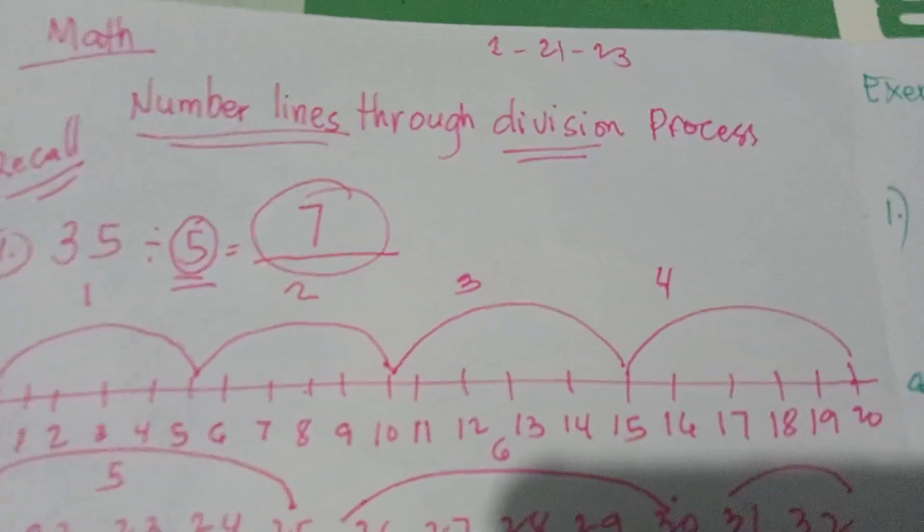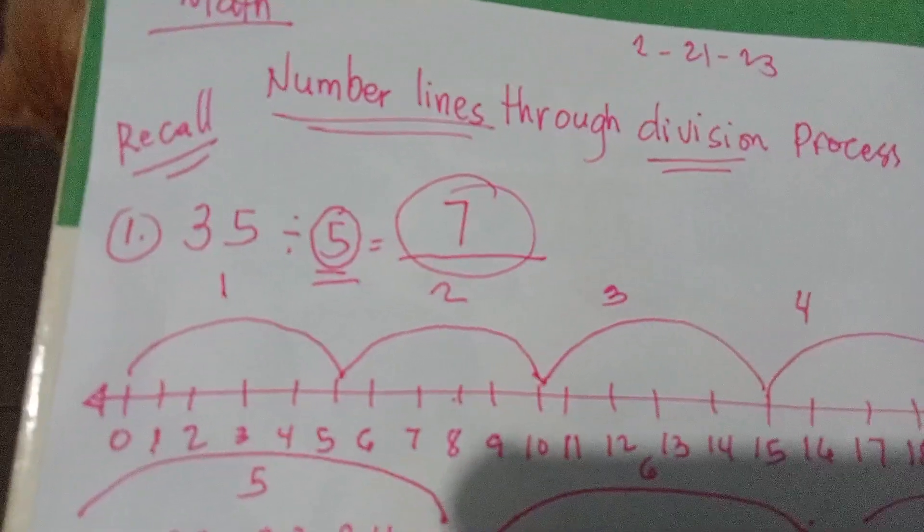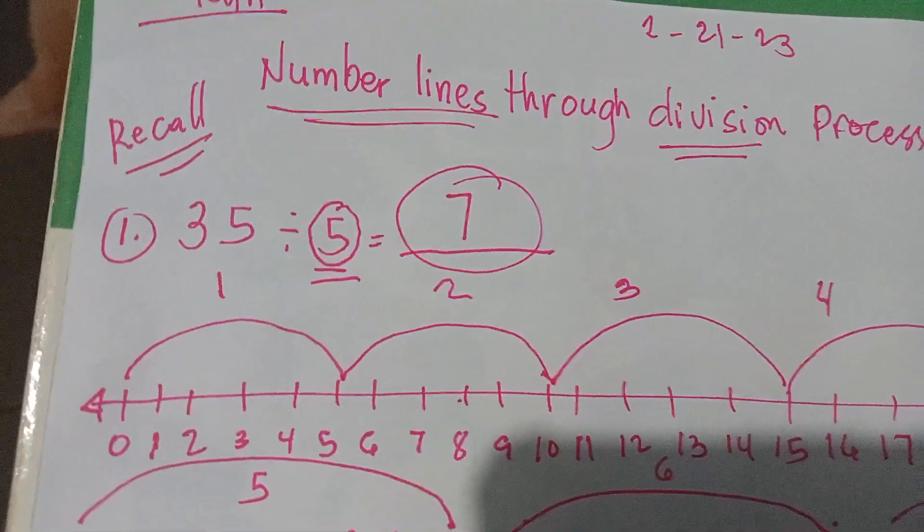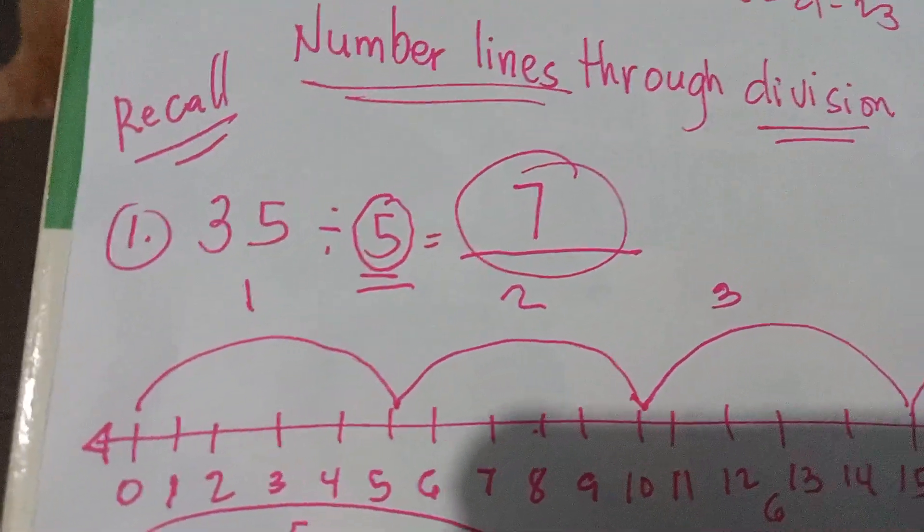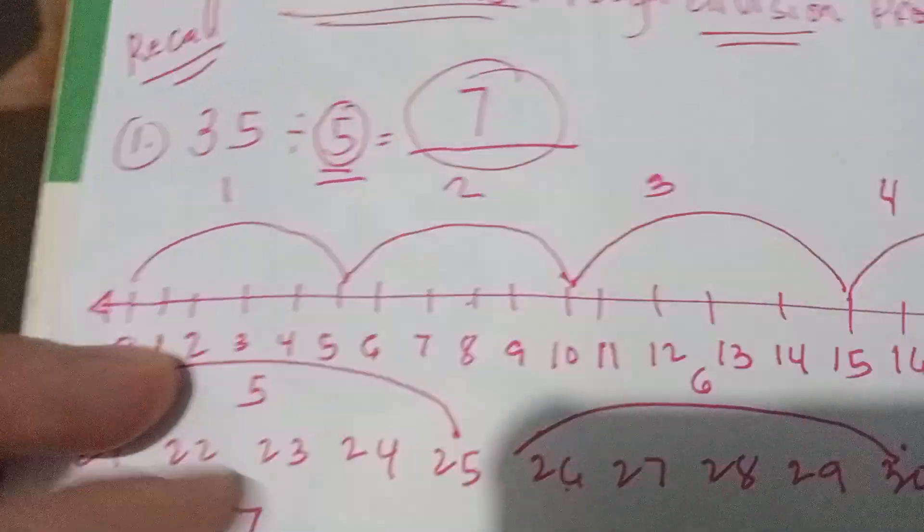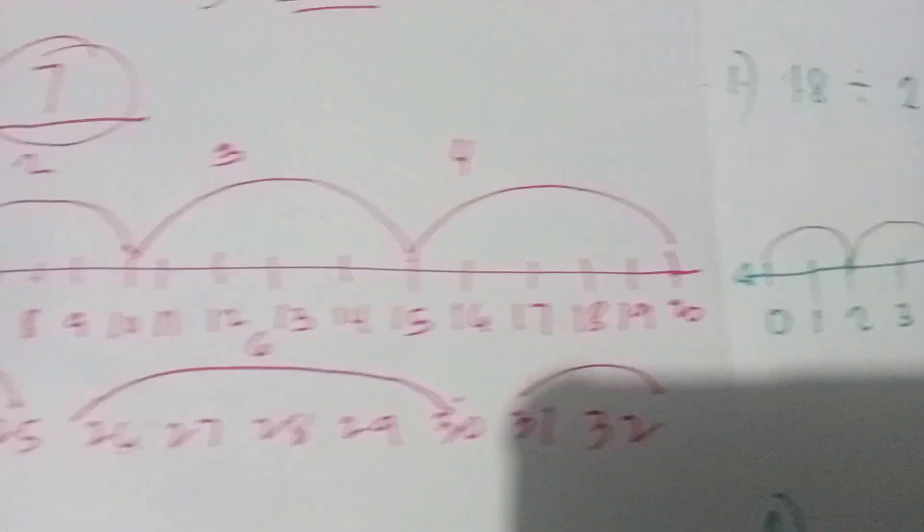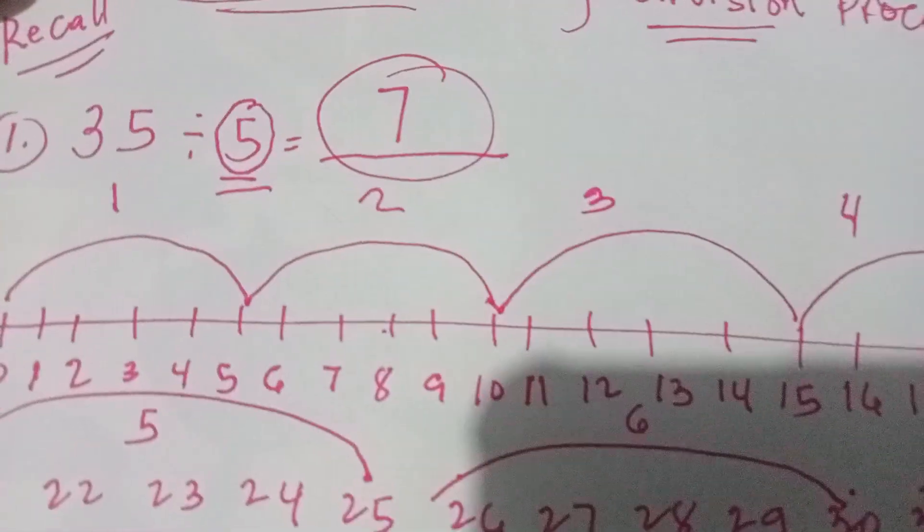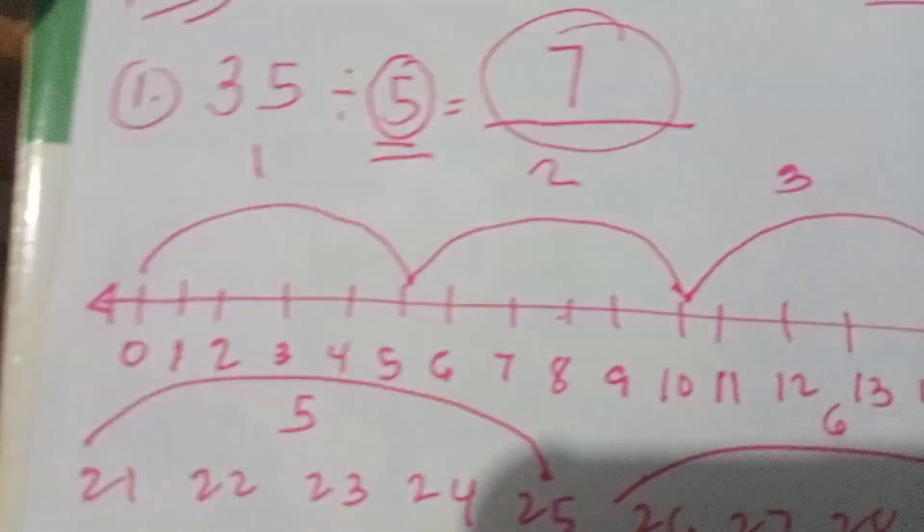I'm going to discuss number lines through the division process. So I'm going to recall for my students: the result of 35 divided by 5 is 7. I'm going to discuss the number line process, where you put a line from 0 until 35, then you divide it by 5.